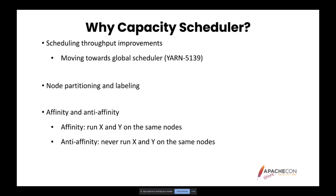Another reason to migrate is node partitioning and node labeling. Labels can be seen as partitions of the cluster — they can be defined as shared or exclusive, and a node can only have one single label at a time. Common uses include targeting special hardware like GPU or deploying licensed software against a specific subset of the cluster. Shared labels allow applications in other partitions to grow into them if no application is asking for that label, but they will be preempted when a new app requests it. Exclusive labels are only accessible to applications that specifically target them. Affinity means running X and Y applications on the same nodes, good for data locality. Anti-affinity is the opposite — never run X and Y on the same nodes, useful when both applications excessively use the same resources on a node.